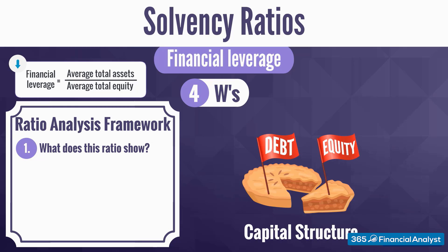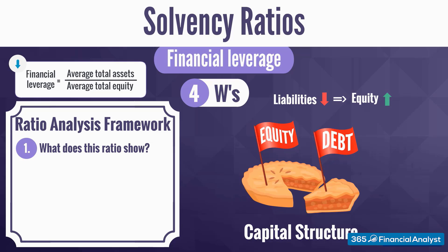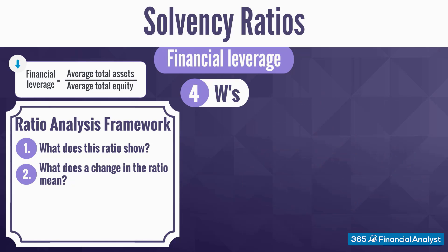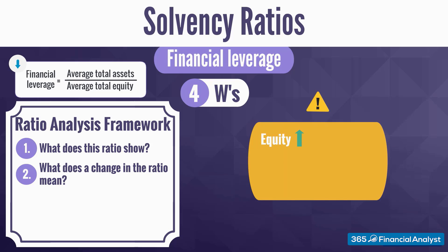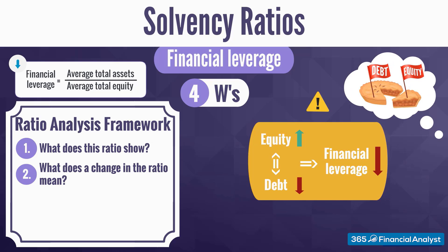Think of a firm's capital structure as an apple pie composed of debt and equity financing. The more liabilities it incurs, the lower the amount of equity, and vice versa. SalesSmart's financial results illustrate this concept thoroughly. Over the last two years, the debt burden decreased at the expense of higher equity financing. Since equity is in the denominator, higher equity results in a lower financial leverage indicator — and higher equity is analogous to lower debt. Thus, lower financial leverage is an indication of lower debt obligations.